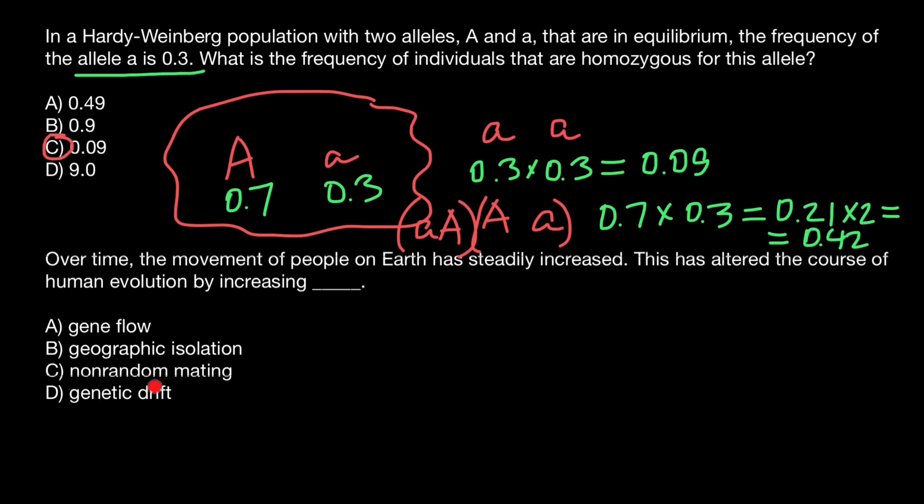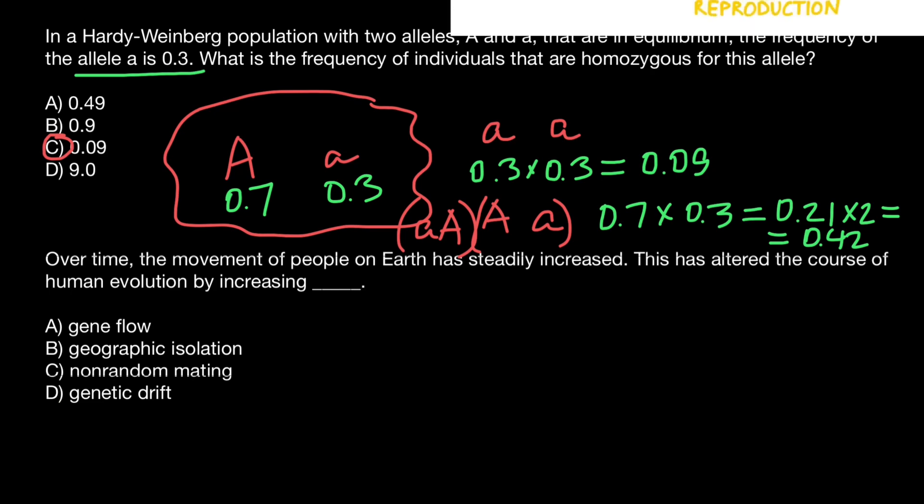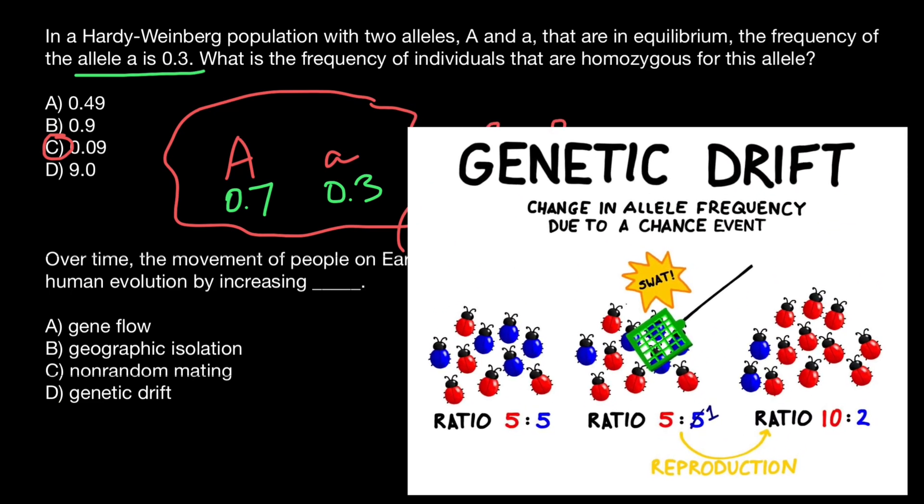Let me start with the end of this list. Variant D, genetic drift. Here is an example of genetic drift. A simple picture that clearly demonstrates what genetic drift is. For example, we start with a population of bugs of two phenotypes. 50% of them are blue phenotype and 50% are red phenotype. So the ratio is 5 to 5.